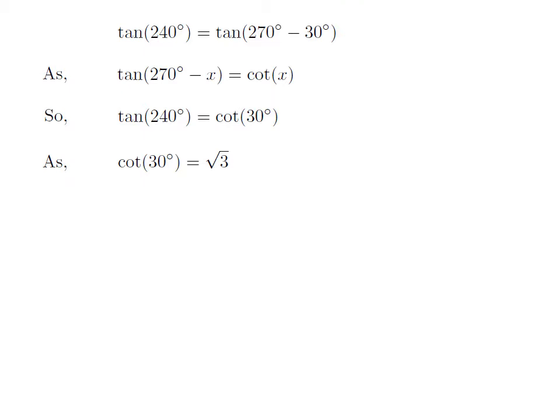As we know, the value of cotangent of 30 degrees is equal to square root of 3. So the value of tangent of 240 degrees is equal to square root of 3.